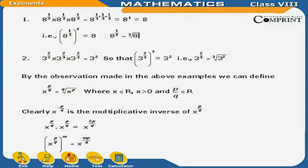By the observations made in the above examples, we can define: X raised to the power p upon q is equal to q radical X raised to the power p, where X belongs to real numbers, X is greater than 0, and p upon q belongs to real numbers. Clearly, X raised to the power minus p upon q is the multiplicative inverse of X raised to the power p upon q. Also, X raised to the power p upon q into X raised to the power p upon q equals X raised to the power 2p upon q, and X raised to the power p upon q, whole raised to the power m, equals X raised to the power mp upon q.